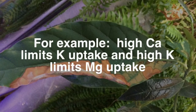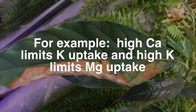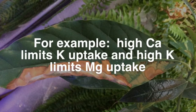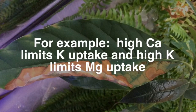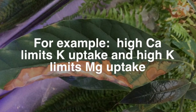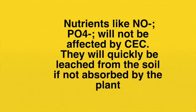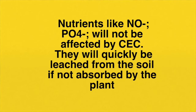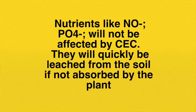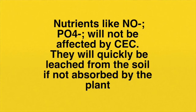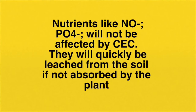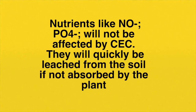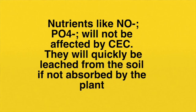Understanding the cation exchange capacity allows growers to know that high calcium will limit the amount of potassium available to plants, and high potassium in the soil will limit the amount of magnesium available to plants. Some nutrients like nitrates and phosphates have a negative charge and therefore will not be affected by the cation exchange capacity. They're readily available to plants, which is great, but they're quickly leached from the soil if they're not used by the plants, especially if you're over-watering.